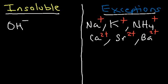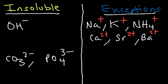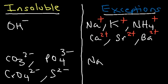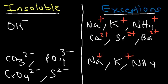The other ions that are generally insoluble are the carbonates, the phosphates, the chromates, and the sulfides. The only exceptions to these are the group 1 metals like sodium, lithium, and potassium, and also the ammonium ion. Other than that, for the most part, these ions are insoluble.